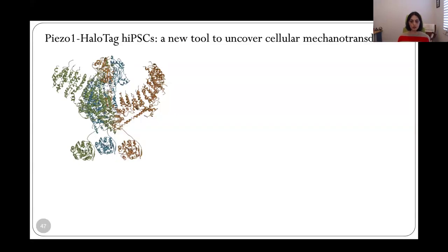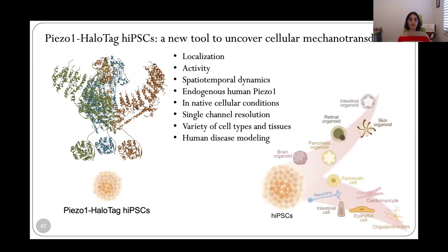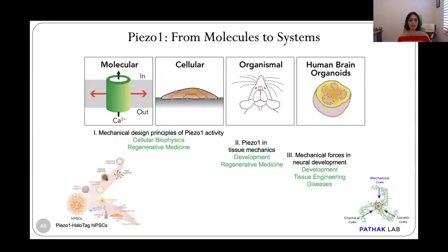We can now use the system for high-resolution imaging of Piezo1 not just at the cellular scale but also at the tissue scale. So to summarize, we've developed a new tool which allows us to measure Piezo1 localization, activity, the spatiotemporal dynamics of both for endogenous human Piezo1 in native cellular condition. And we can measure the activity at a single channel resolution in a variety of cell types and tissue organoids. And this system will also allow us in the future to do human disease modeling. So we have the ability to examine Piezo1 dynamics and function in many different functional contexts. We're really excited about all the possibilities that this Piezo1 HaloTag tool opens up in studying human Piezo1 from the molecular to the tissue scale.